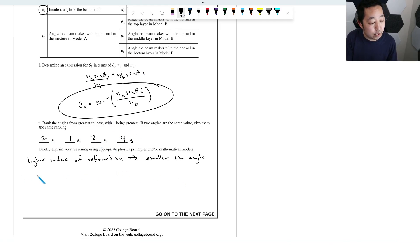So theta 1 or theta 2 has the smallest index of refraction. And theta 1 and theta 3 have the same index of refraction. And then theta 4, the medium has the highest index of refraction.